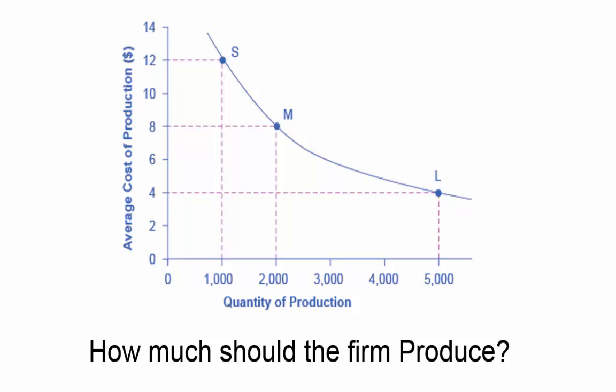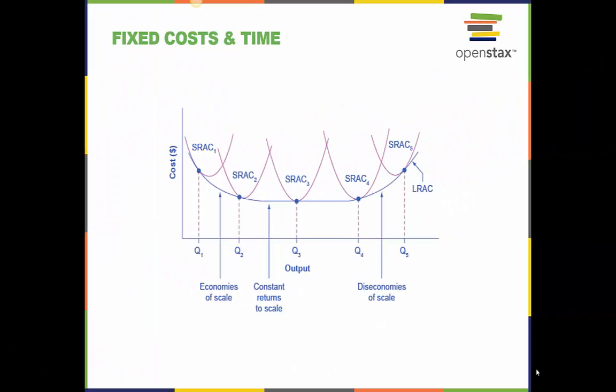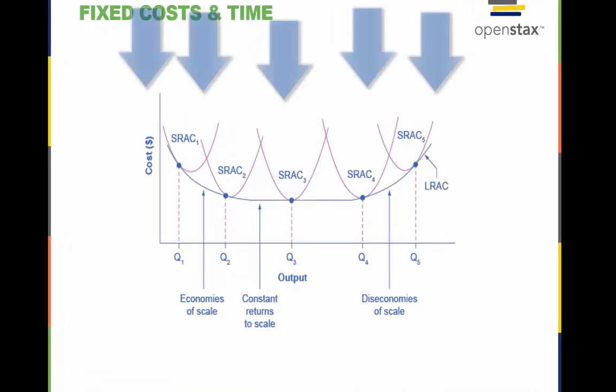If economies of scale are present, then the answer to the question, how much should the firm produce, is answered by looking at the behavior of average costs. In the long run, all costs are variable, but in the short run, fixed costs are present.